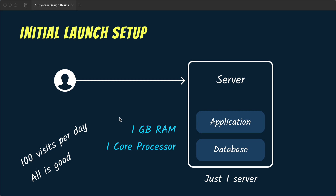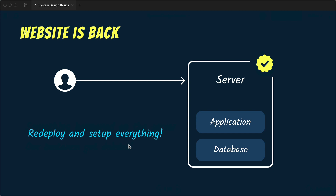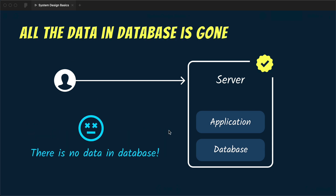People are starting to use our application and creating notes, but one day you start getting complaints from users that the website is not available. You look at the server and find out that our instance has been deleted due to some issue on the DigitalOcean side and we don't have access to our database or the application anymore. You set everything up and redeploy the website, but users complain they can't log in. The database is empty because when the server crashed all our data was gone with it — you had no backups, so you can only apologize and ask users to start from scratch.